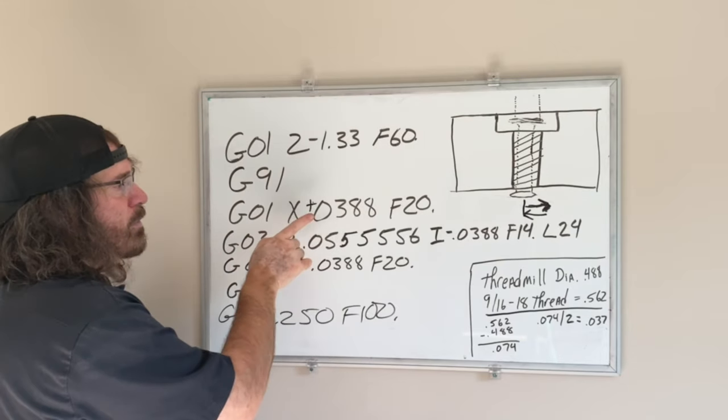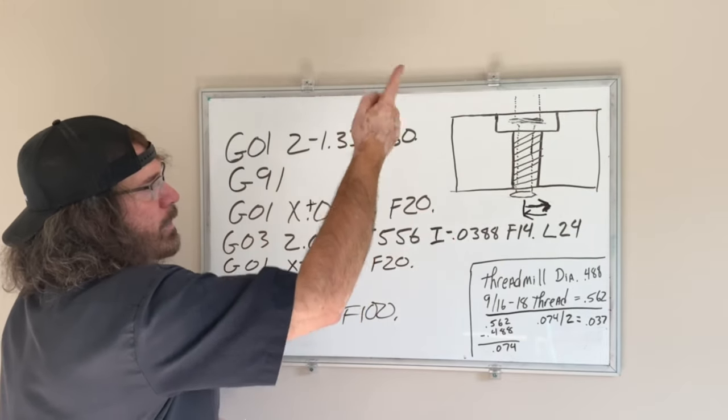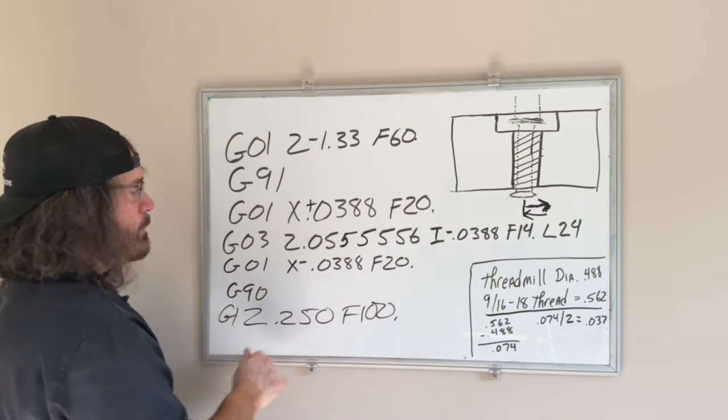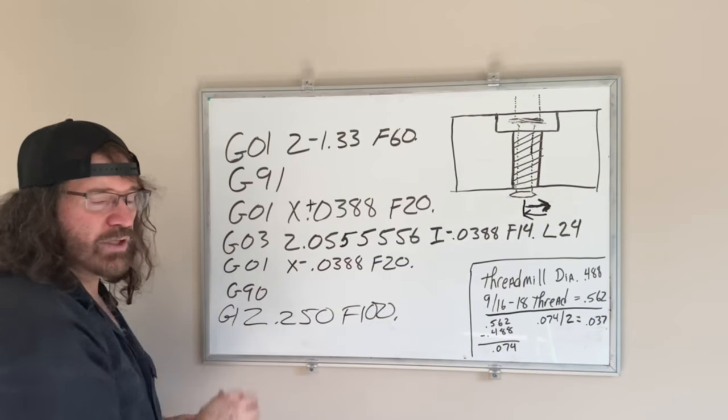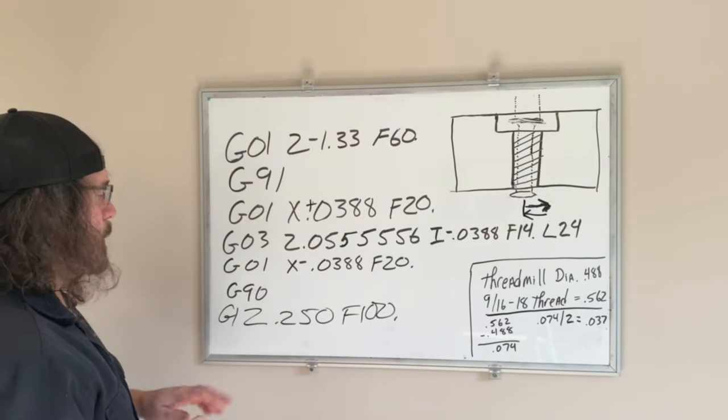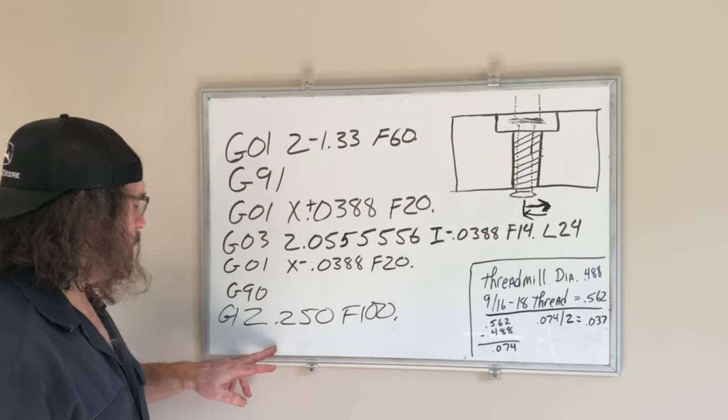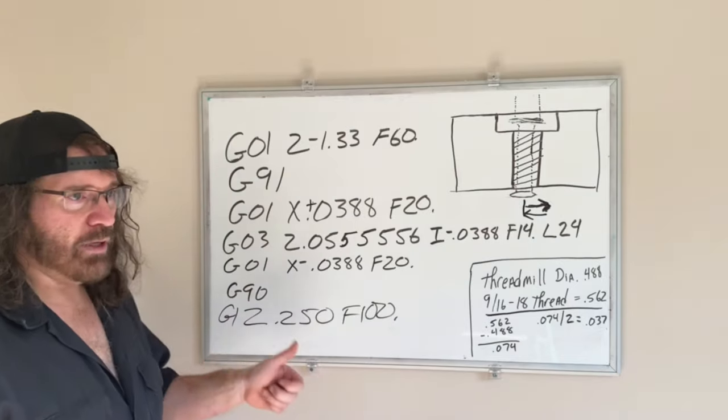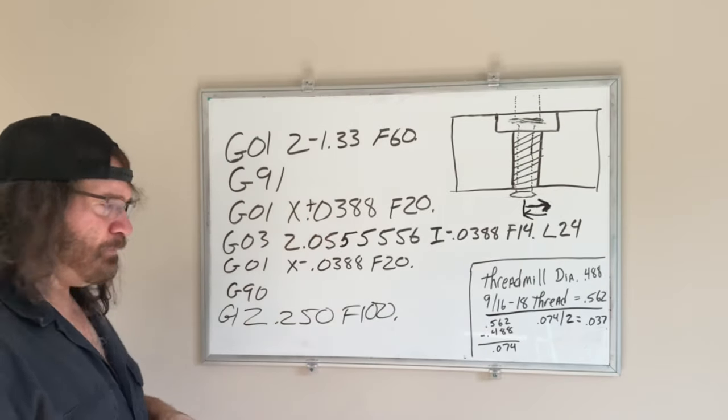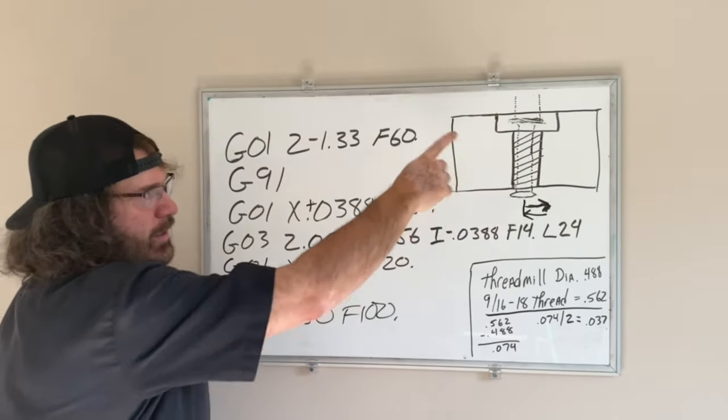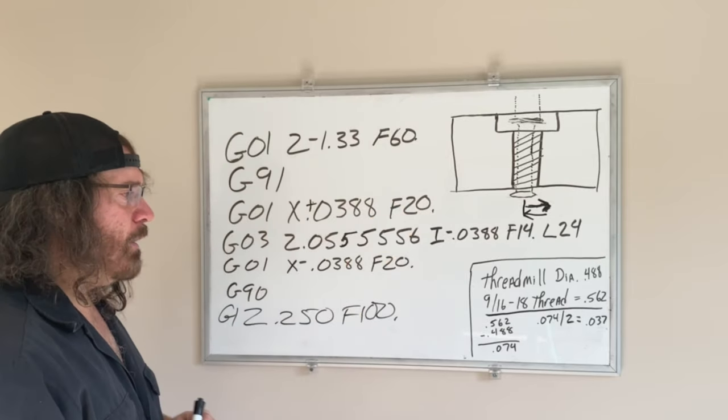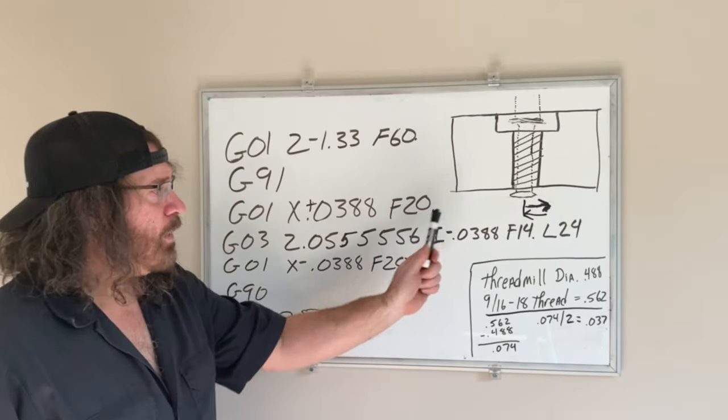So we started out here, we went positive, we did all our loops. Now I gotta move back. I'm going back to absolute. And then from there I believe I came up to 0.250 above and then I did a couple of little chamfers from there. Okay, now how do I figure that out?